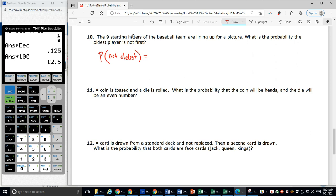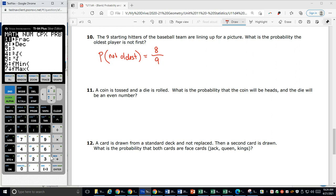All right, so there are nine starting hitters, which means there's one who's the oldest. So how many are favorable? Eight of them, because there's one who is the oldest. I don't want him to be first. So eight favorable, because one of them is the oldest out of nine total. So eight out of nine, that I don't believe reduces. Math, make it a pretty fraction, eight over nine.